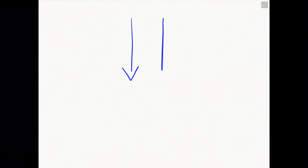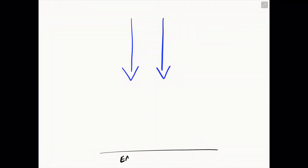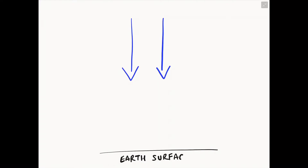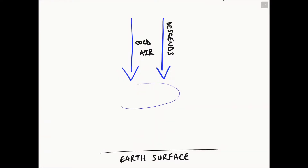Anticyclones are caused by a period of high pressure. This high pressure is created when the air high in the atmosphere begins to sink towards the earth's surface. The falling air increases the weight of the air pressing down on the earth's surface, causing the air pressure to be high. The cold air moves in a clockwise direction towards the earth's surface.